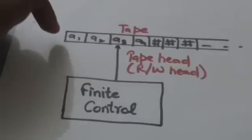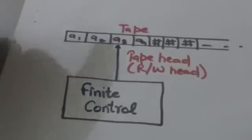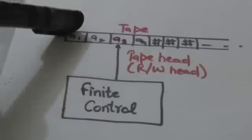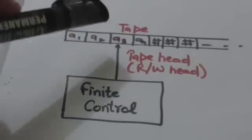This linear tape has a left end but is infinite at the right end. It is divided into squares and each square can hold one symbol.